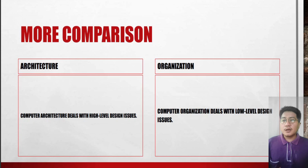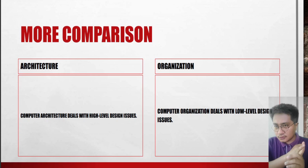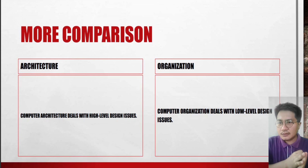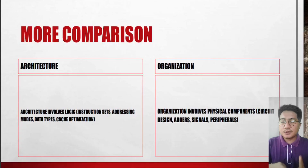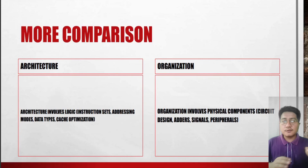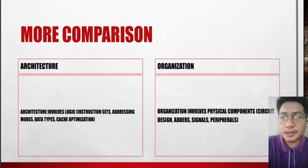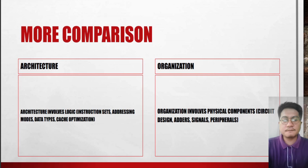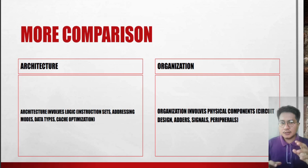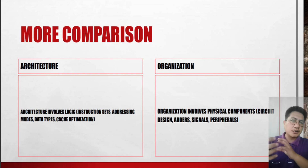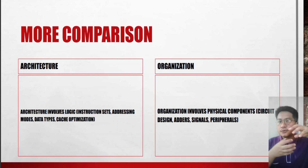Computer architecture deals with high-level design issues, while organization deals with low-level design issues. Architecture involves logic instructions, addressing modes, data types, and cache optimization. Organization involves physical components like circuit designs, adders, signals, and peripherals. That's it for the comparison and differentiation of computer architecture and computer organization.